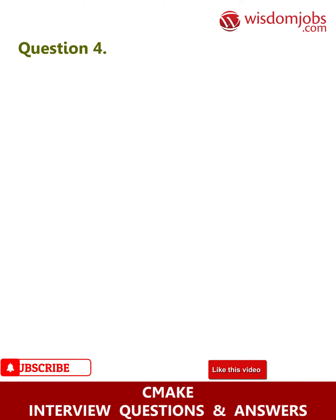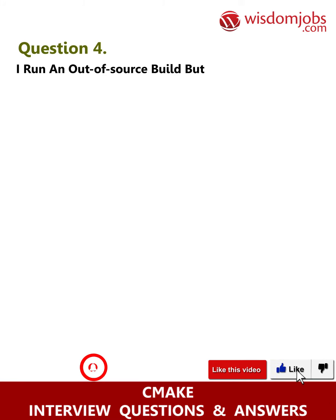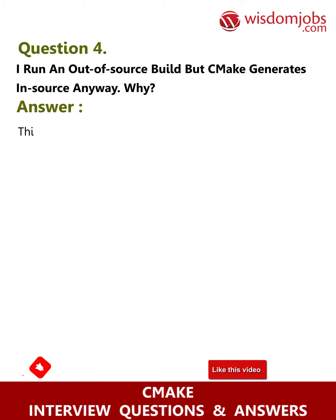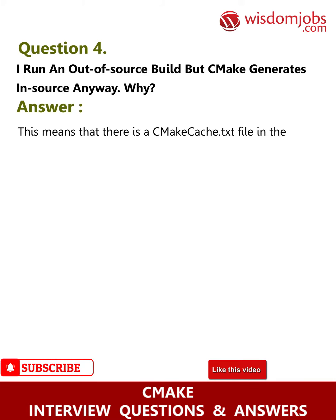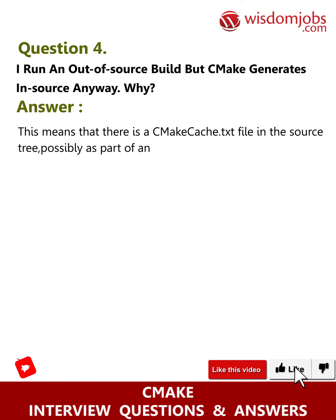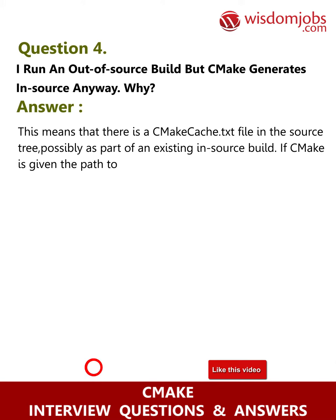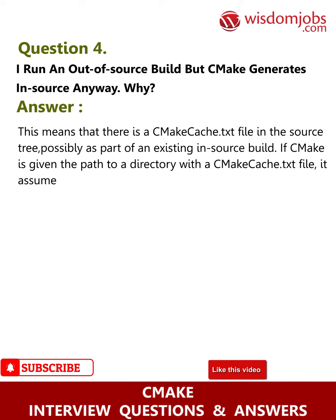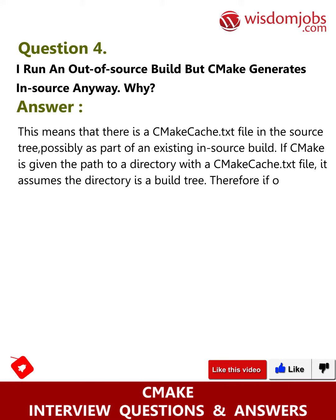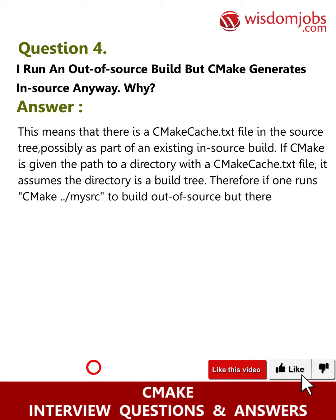Question 4: I run an out-of-source build but CMake generates in-source anyway. Why? Answer: This means that there is a CMakeCache.txt file in the source tree, possibly as part of an existing in-source build. If CMake is given the path to a directory with a CMakeCache.txt file, it assumes that directory is a build tree.